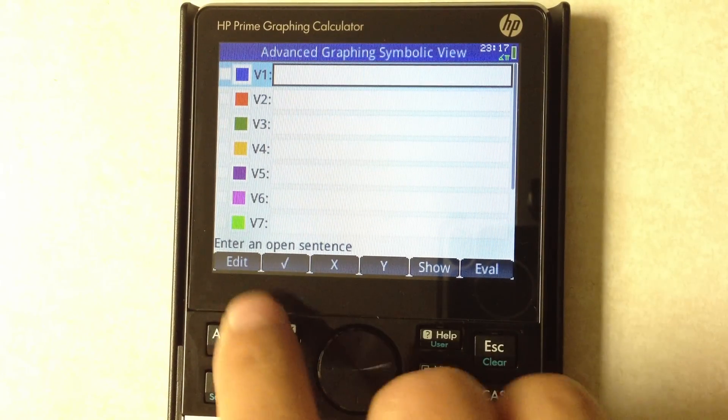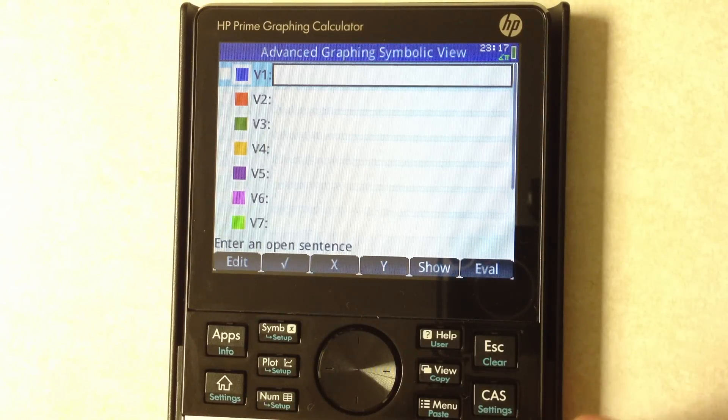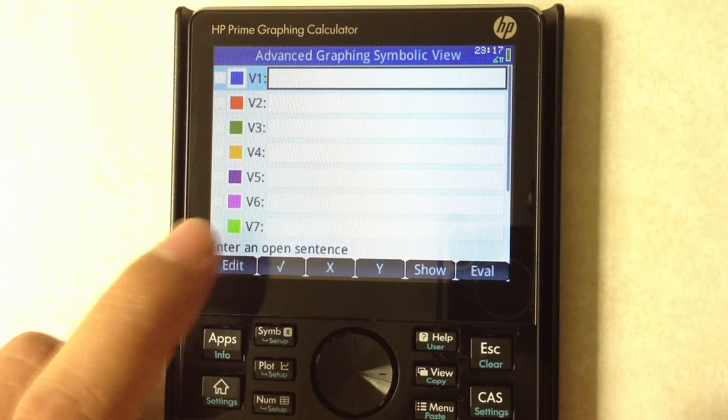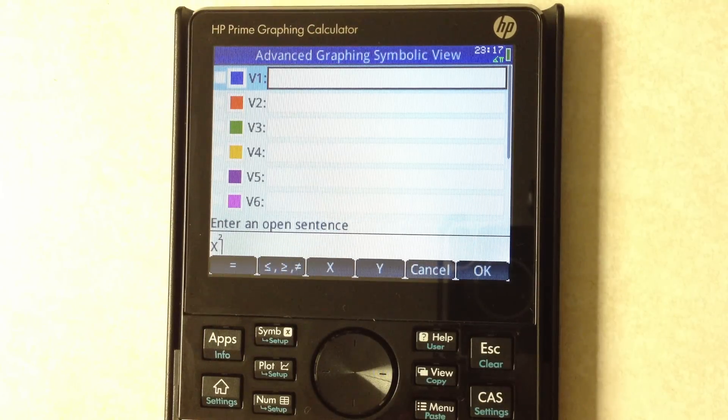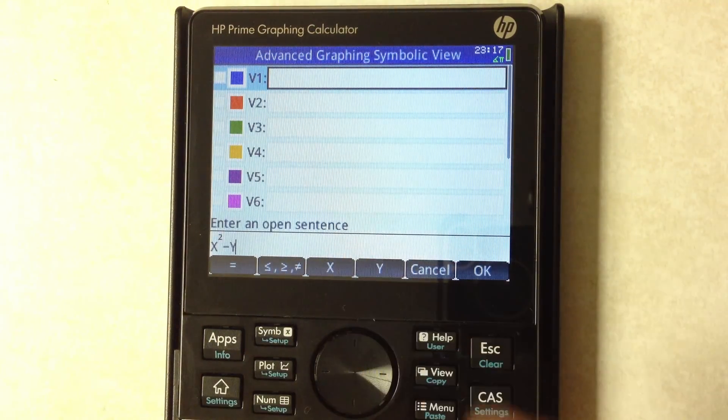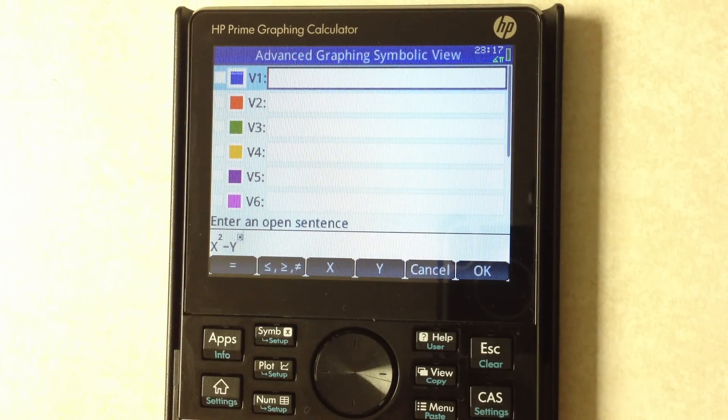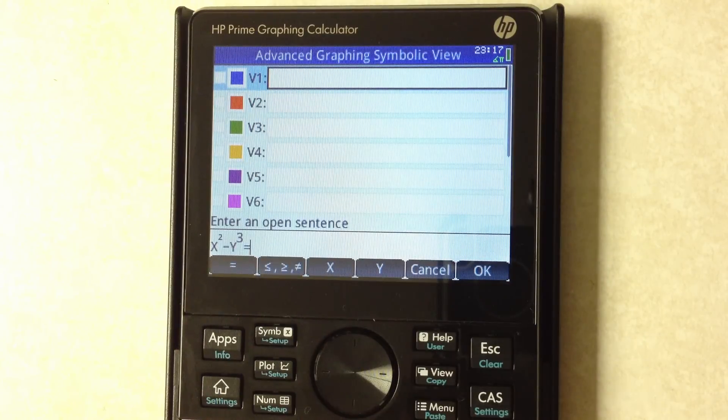If we want to graph something a little more advanced, so implicitly defined functions or equations, let's do something like x squared minus y cubed is equal to say one.